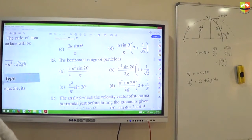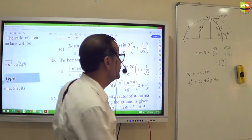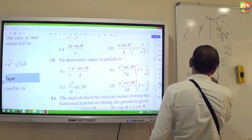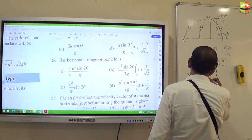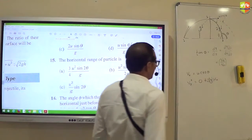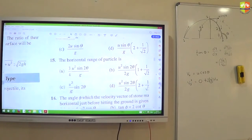Vx is your initial velocity of x axis u cos theta. Vy square is uy square is 0 plus 2g into h max. h max is this. 2 into 2g, 2 into 2 into 2, 2 into 2.